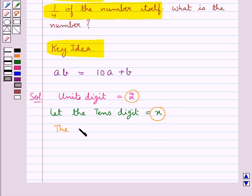So the two-digit number is given by 10 into the tens digit that is X plus the units digit that is 2. This is equal to 10X plus 2. So this is the number formed when we have the units digit as 2 and the tens digit as X.